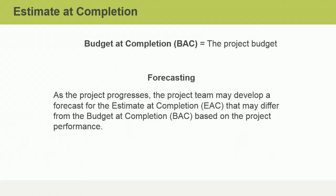During cost planning, the project manager and team establish a budget at completion, or BAC — the project budget. As the project progresses, we learn more about actual costs and project performance. This allows the team to forecast a new project budget called the Estimate at Completion, or EAC. There are four different formulas for the EAC; which one you use depends on the scenario. The first two formulas are discussed in a separate topic. In this topic, we will discuss the third and fourth formulas for calculating the EAC.